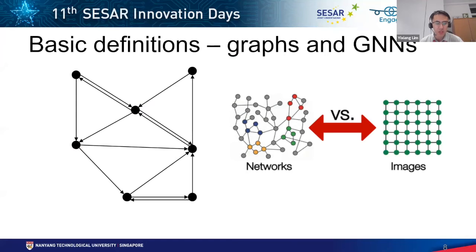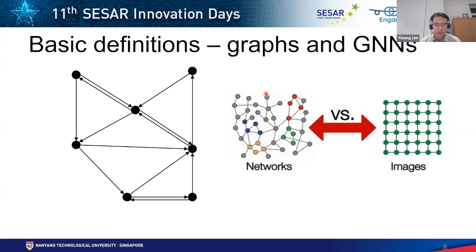A graph is a set of nodes or vertices and edges or links. If an edge exists between two nodes, the two nodes are related. Graphs can be directed or undirected. Graph neural networks (GNNs) perform deep learning on non-Euclidean structured data. Conventional deep learning methods like CNNs operate on Euclidean structured data and cannot be directly applied to graph-structured data. GNN operations such as convolution and pooling are in many ways analogous to those of CNNs.